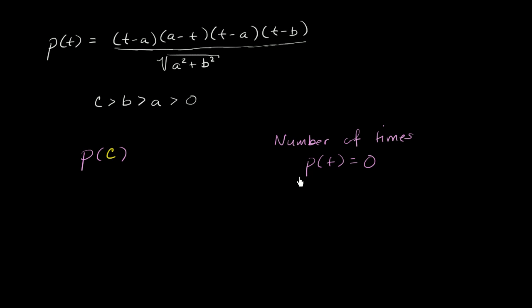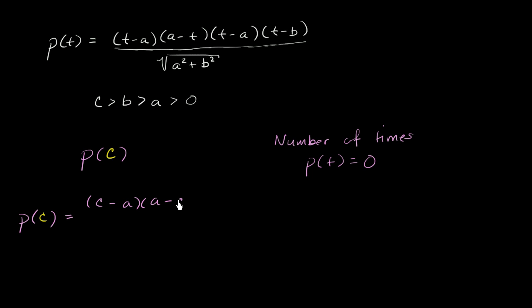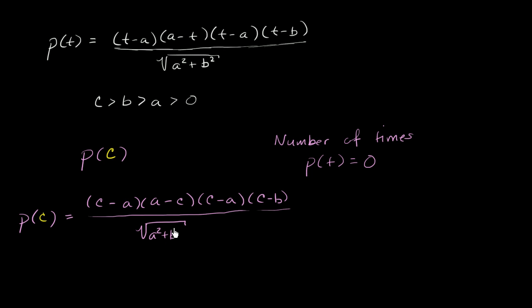So let's think about what p of c is. p of c is going to be equal to c minus a, times a minus c, times c minus a, times c minus b, all of that over the square root of a squared plus b squared.